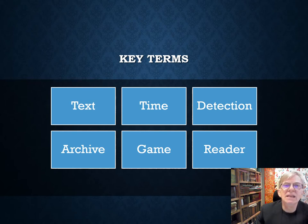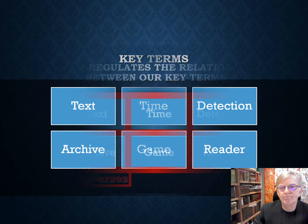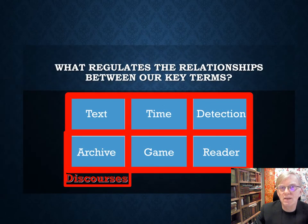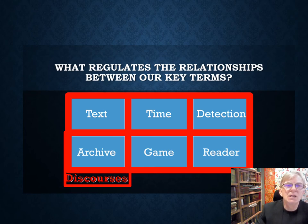Here are the key terms again as we first saw them: text, time, detection, archive, game, and reader. And this is where we left them, enmeshed in something I called discourse after Michel Foucault, which regulates how we can connect these key terms.